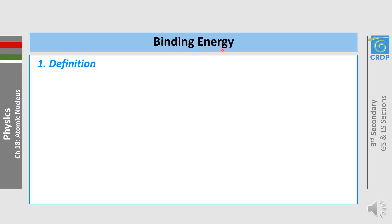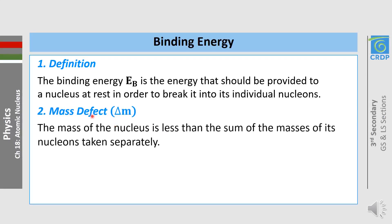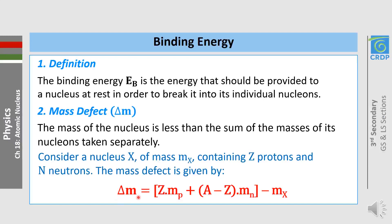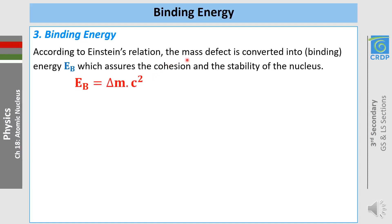Now we move to binding energy. The binding energy is the energy that should be provided to a nucleus at rest in order to break it into its individual nucleons. There is a mass defect ΔM: the mass of the nucleus is less than the sum of the masses of its nucleons taken separately. We calculate this as ΔM = Z × m_p + (A - Z) × m_n − m_nucleus. According to Einstein's relation, this mass defect converts into binding energy, which assures the cohesion and stability of the nucleus.